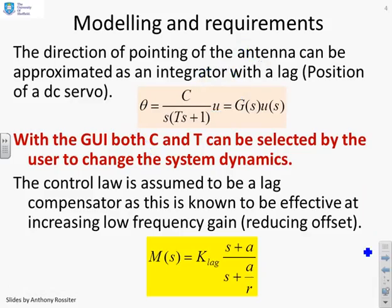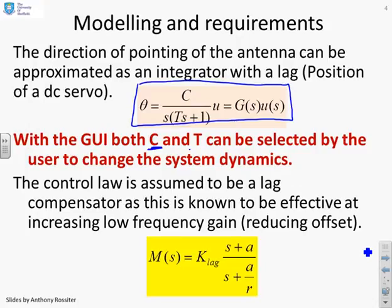So some modeling requirements. The direction of pointing of the antenna can be approximated by an integrator with a lag. So that's a bit like a position control of a DC servo. The G(s) is given by c over s(Ts+1). Within the GUI that we're going to demonstrate, both the parameters c and the parameters t can be selected by the user to change the system dynamics.